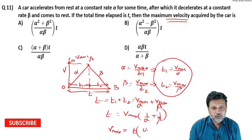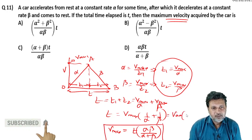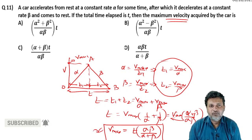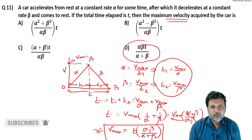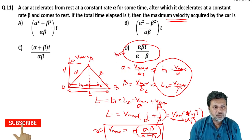LCM लेने के बाद V_max × (alpha + beta) / (alpha × beta) होगा, और cross multiply करने पर V_max की value आएगी जो option D है। D option is the correct option।